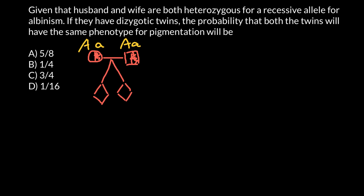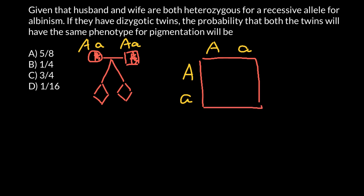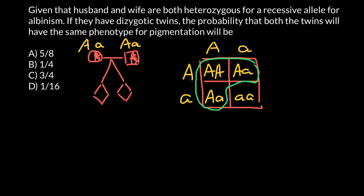Now let's build a simple Punnett square. If we know that both parents are heterozygous, we can calculate the probability for their children to be of a certain phenotype. We get: AA, Aa, Aa, and aa. As you see, this family has a three-quarters probability of having phenotypically normal children, and a one-quarter probability that their child would be affected.